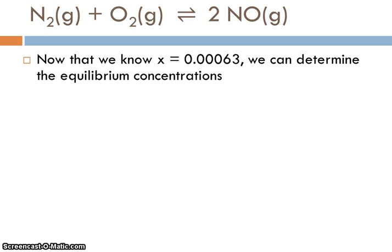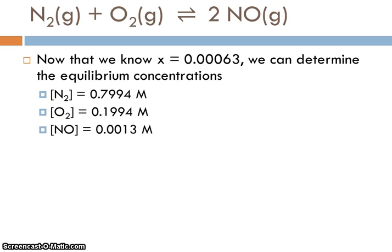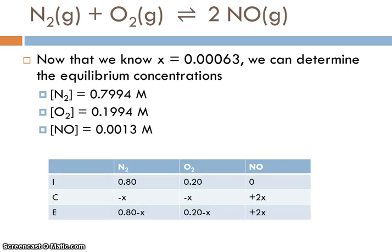So now that we know the value of x, we can find the equilibrium concentrations. We can go back to our ICE table and calculate that. So the concentration of nitrogen at equilibrium is 0.7994. But that's a tiny change from the original concentration. The oxygen concentration is 0.1994. Really not a significant change from the initial concentrations. And the NO concentration has to be twice x, or 1.3 times 10 to the minus 3 molar. Really small numbers. I'll notice in the ICE table I didn't put in all the precision, but 0.799 is not that different from 0.8.